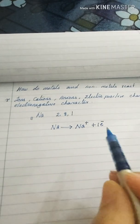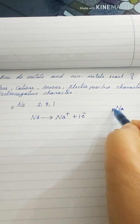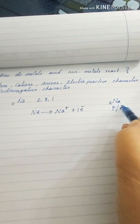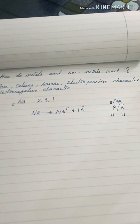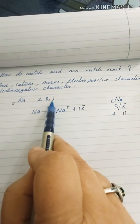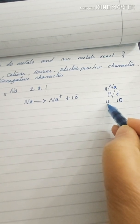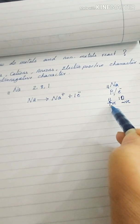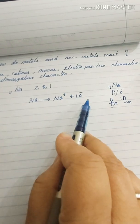Why does sodium get a positive charge? Sodium's atomic number is 11, meaning it has 11 protons and 11 electrons. To attain stability, sodium loses one electron, so now it has 10 electrons and 11 protons. There are 10 negative charges and 11 positive charges — the positive character predominates, which is why sodium gets a positive charge after losing the electron.